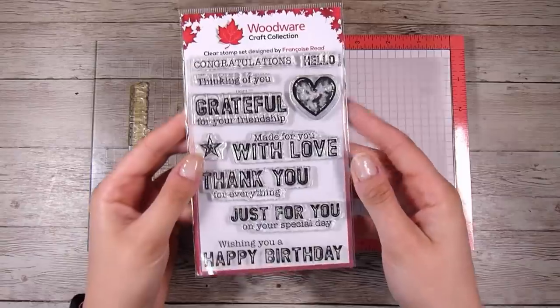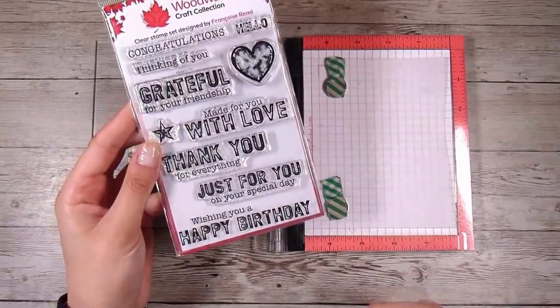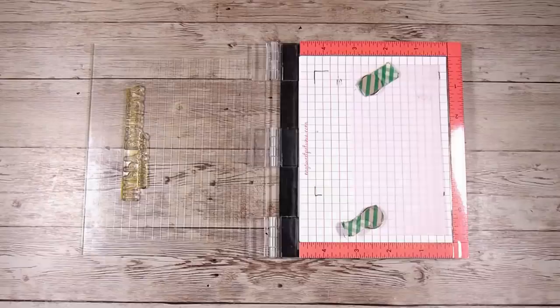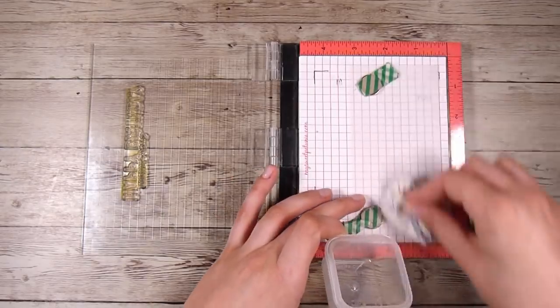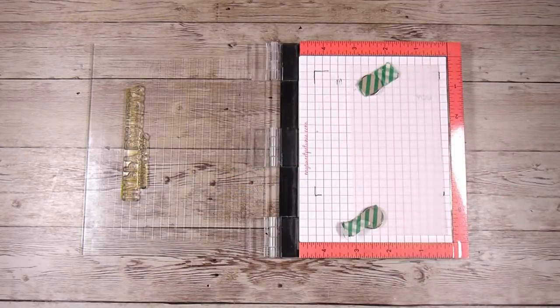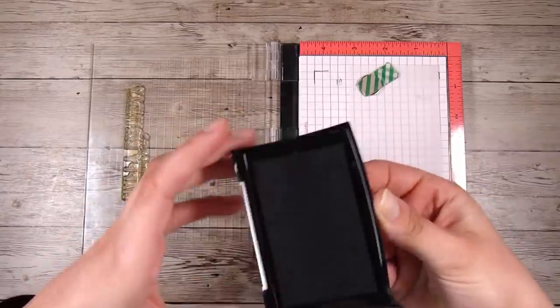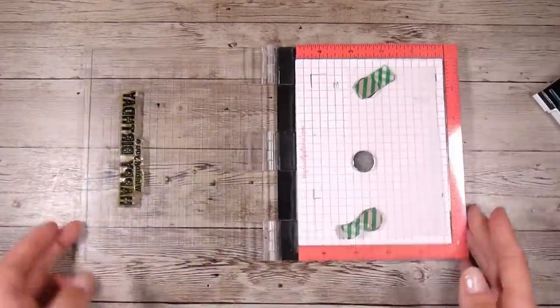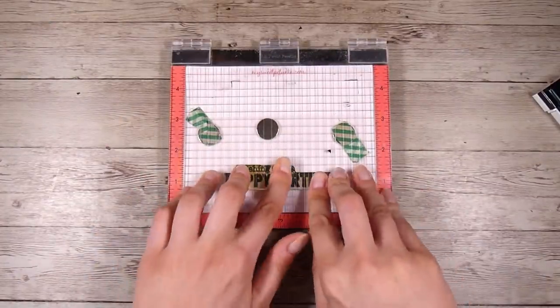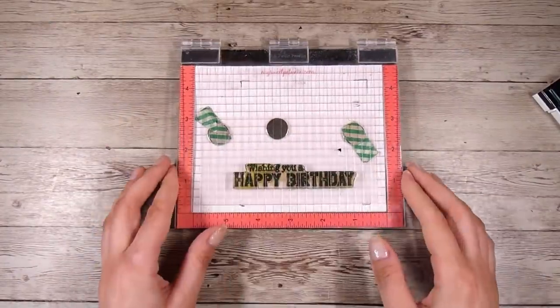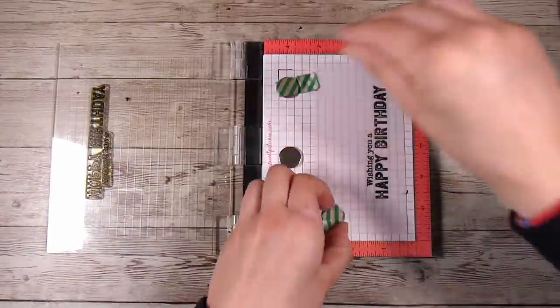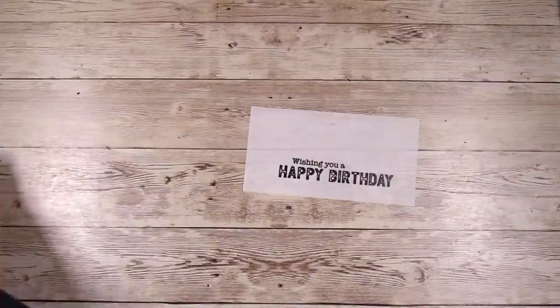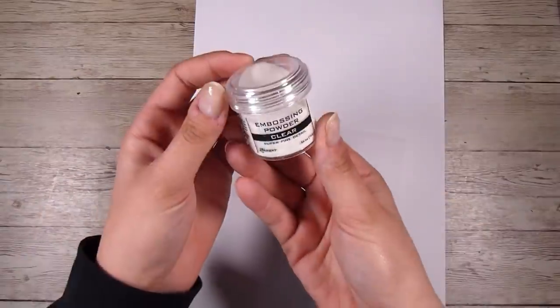So next up, we are going to stamp out the sentiment and this is a stamp set that I've used many times. I will link as many supplies as I can down below for you guys. Because sometimes things are not available anymore or have been discontinued or things like that. So I know that can be frustrating, but I really just encourage you to have a look around and use what you have in your stash. And as I said, not having to use all of these elements that I'm showing today on every single card. So that's definitely an option.